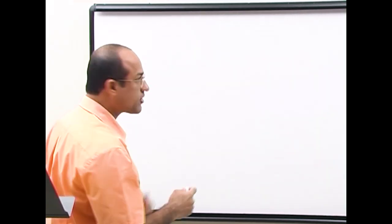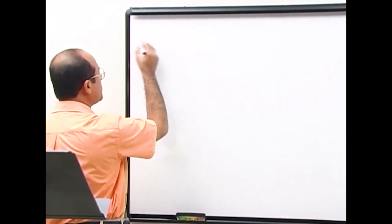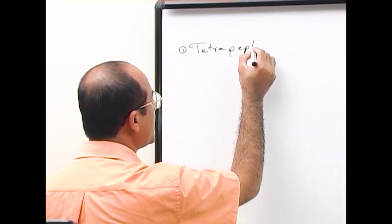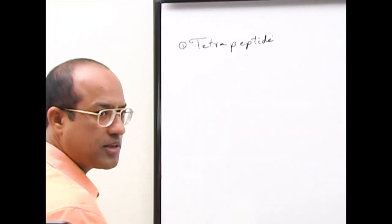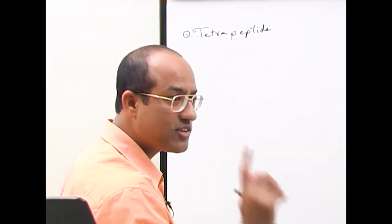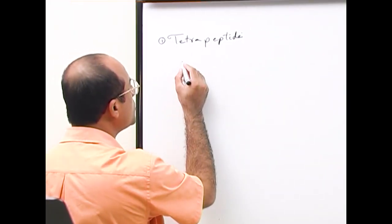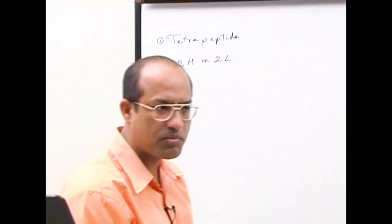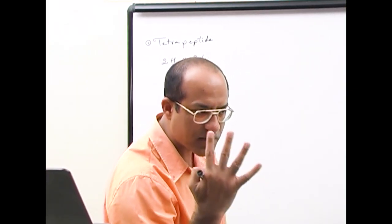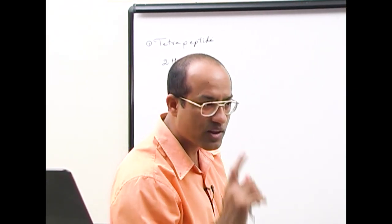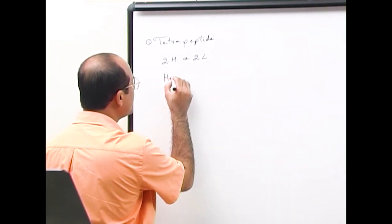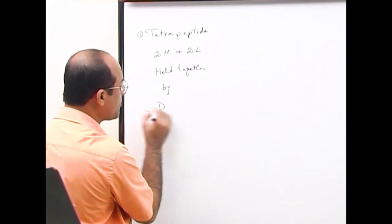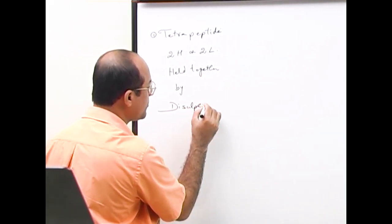Any antibody is basically a tetrapeptide — it consists of four peptide chains. When I say antibody is a tetrapeptide, it means it has four peptide chains. It is a tetrapeptide consisting of two heavy chains and two light chains held together by disulfide bonds.